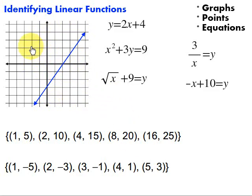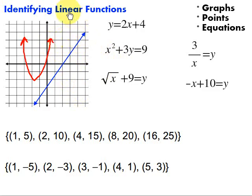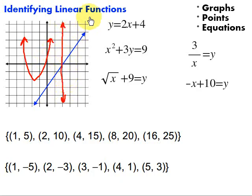If we had something like a parabola shape, would that be a linear function? No, because it's not a straight line. It is a function because it would pass the vertical line test, but it is not linear because it's not a straight line. What about a vertical line? It is linear, but is it a function? No, because it would fail the vertical line test. That would be the line x equals 2 in this case — it is linear, but not a function.